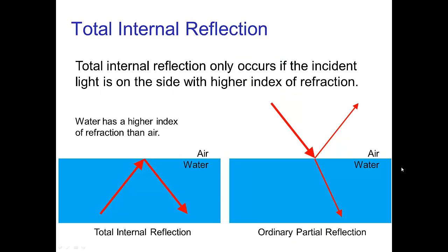Total internal reflection only occurs if the light is coming through the material that has the higher index of refraction and reaches the interface with the material with the lower index of refraction. For example, we get this when light hits the surface of water from below and is totally internally reflected — none of it passes out into the air. In the other situation, where light is coming from air and is refracted as it passes into water, we never get total internal reflection — we only get partial reflection.